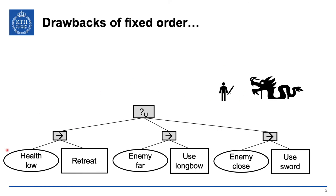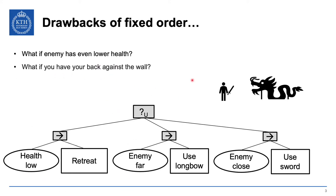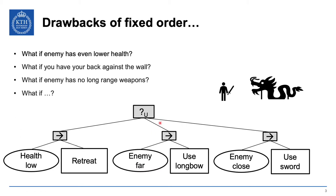What are the drawbacks of a fixed child ordering? If health is low we retreat — but what if the enemy has even lower health? If the dragon is almost dead, does it make sense to retreat? What if your back is against a wall and you can't retreat? If the enemy has no long-range weapons, kiting tactics — retreating then using your longbow repeatedly — might make more sense, but that's not captured by a static ordering.